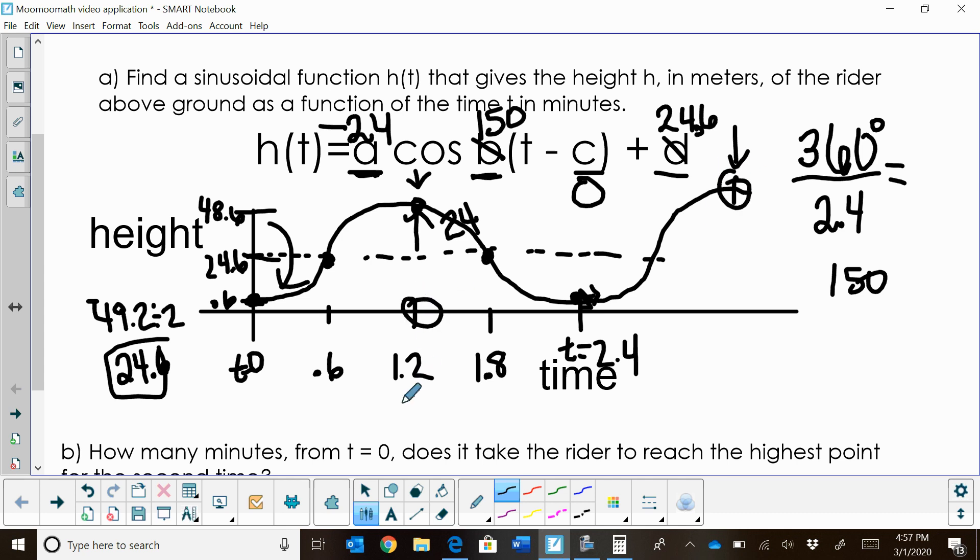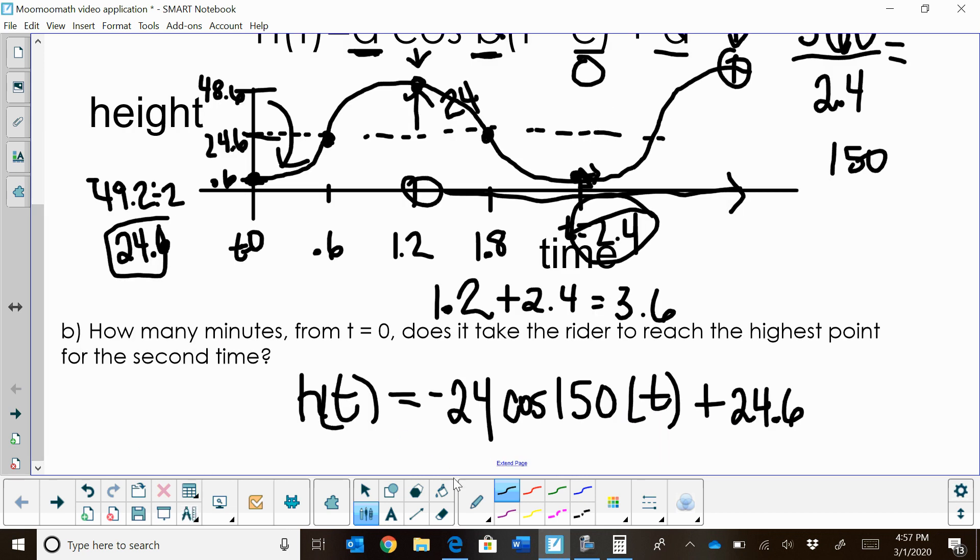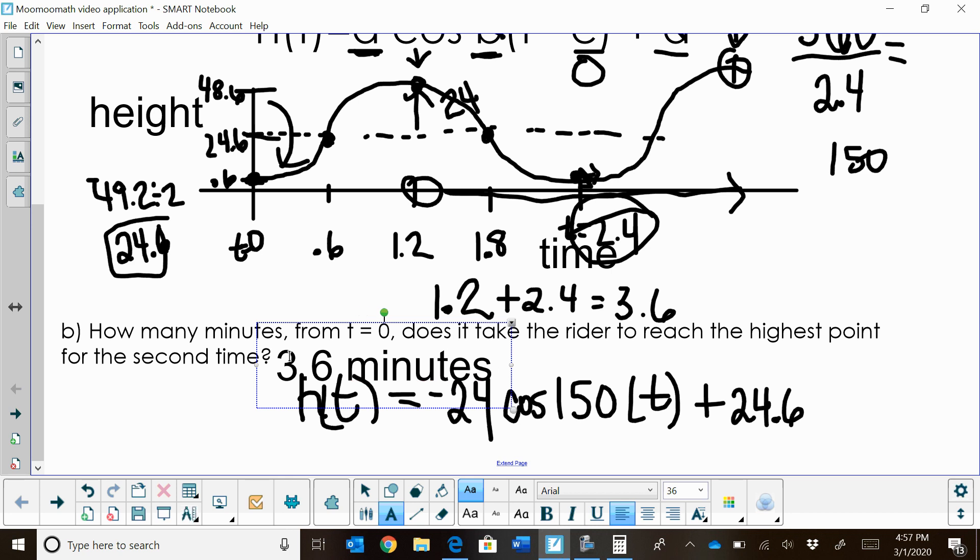Well, we know we're at 1.2 minutes. And how long is it going to take to do another full cycle? Well, a full cycle is 2.4. So I'm going to have 1.2, which is my highest point, plus one full cycle of 2.4. So that's going to be 3.6 minutes. 3.6 minutes to reach the highest point on the Ferris wheel after leaving the ground.